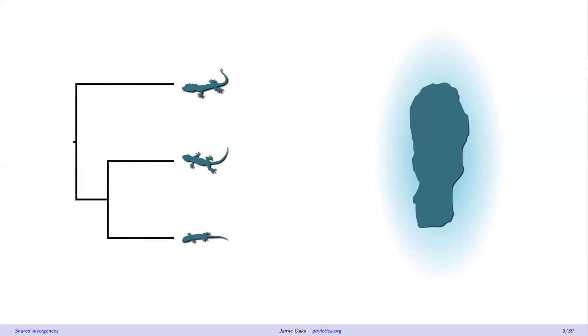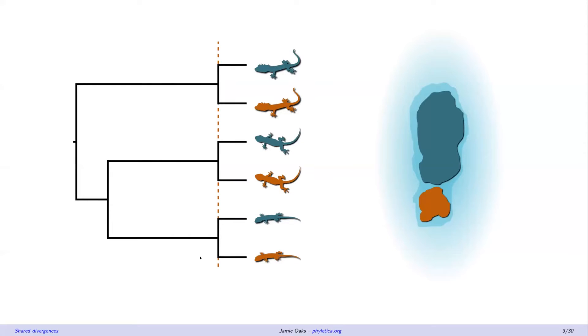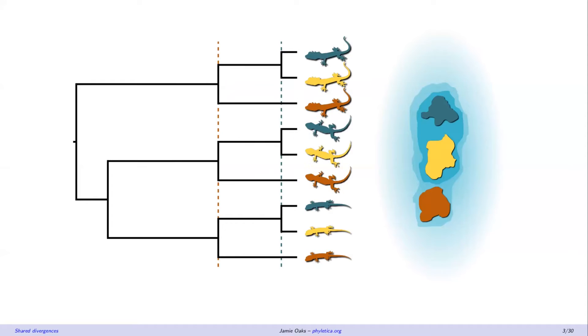And there's a lot of reasons why we might expect that assumption to be violated. So I'll show you a biogeographic example. Let's say we have three species of lizards on this island. At some point, sea levels rise and they fragment this island into two islands that might cause all three of our species to diverge at the same time, violating that independence assumption.